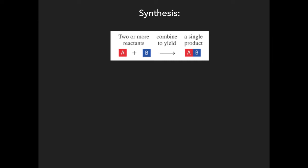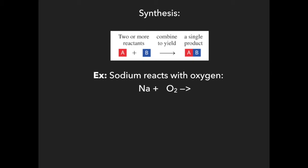Let's look at an example of a synthesis reaction. Sodium reacts with oxygen — those are two individual elements that react together to form one product. Sodium has the symbol Na, and it reacts with oxygen. You have to be careful because oxygen is diatomic; it's one of the seven diatomic elements. When it's by itself, it cannot exist as O — it has to exist as O₂. So sodium and oxygen combine together to form one compound.